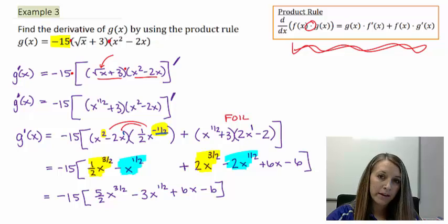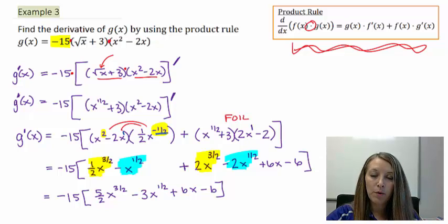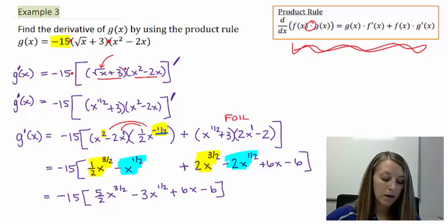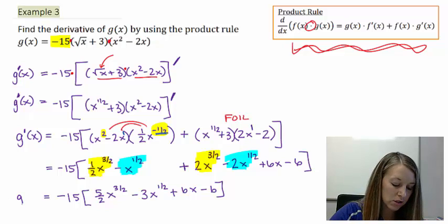And now, if I choose to, I can distribute that negative 15. But if I distribute it, will it make my problem any easier, any more simplified? Typically, the answer is no. And that's the case in this situation. So I don't need to distribute it because it will not make my problem any more simplified. It will not make it any prettier, per se. So we have our final answer here, g prime of x.